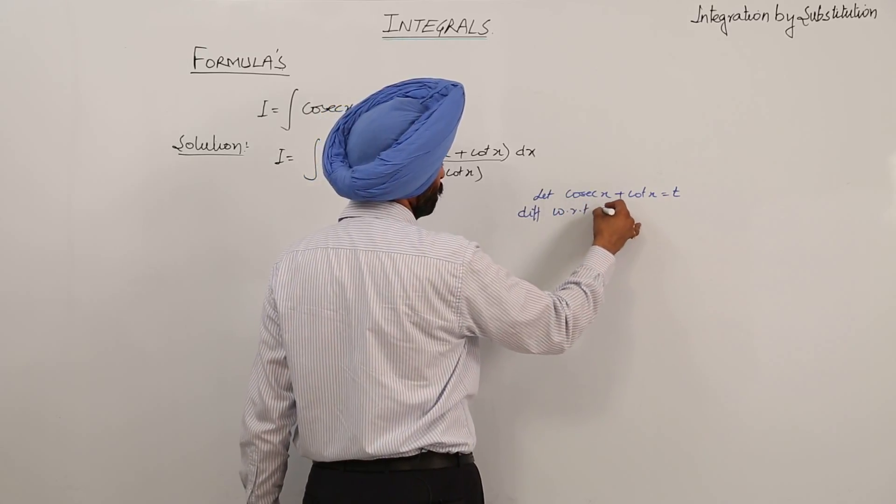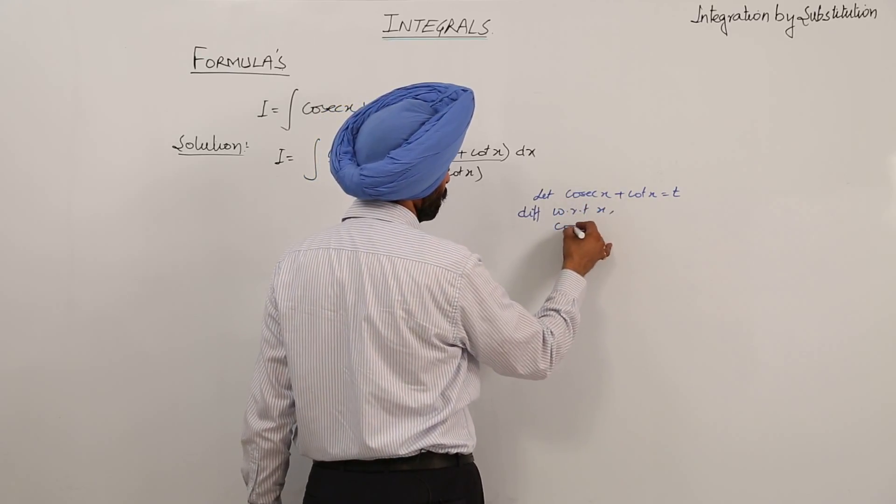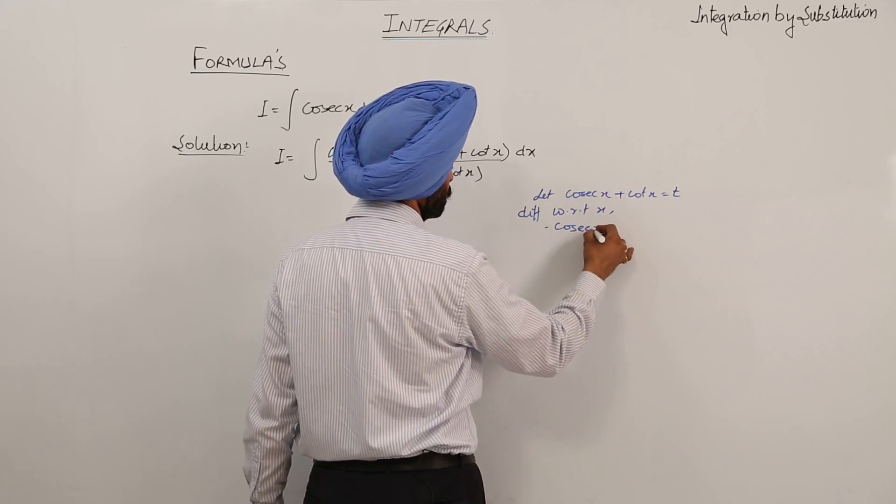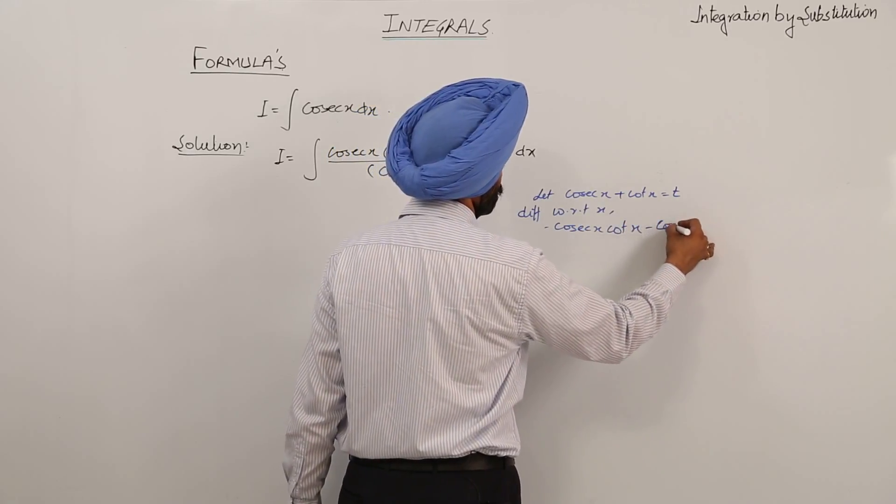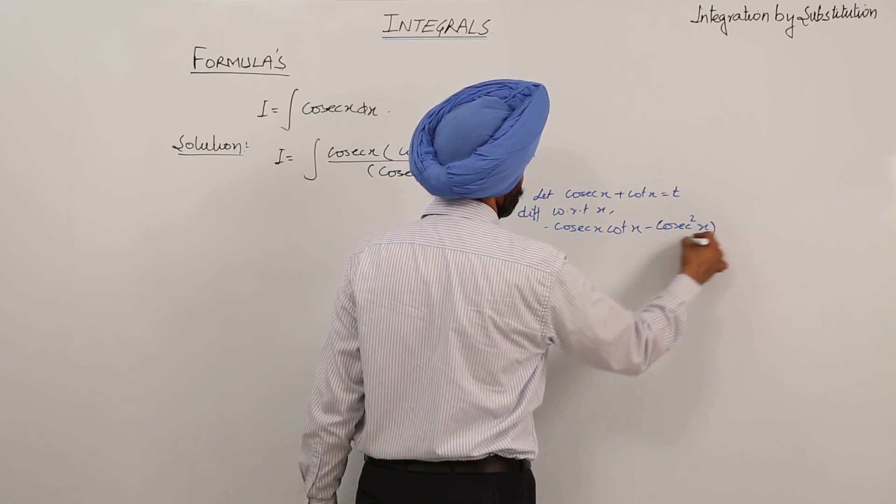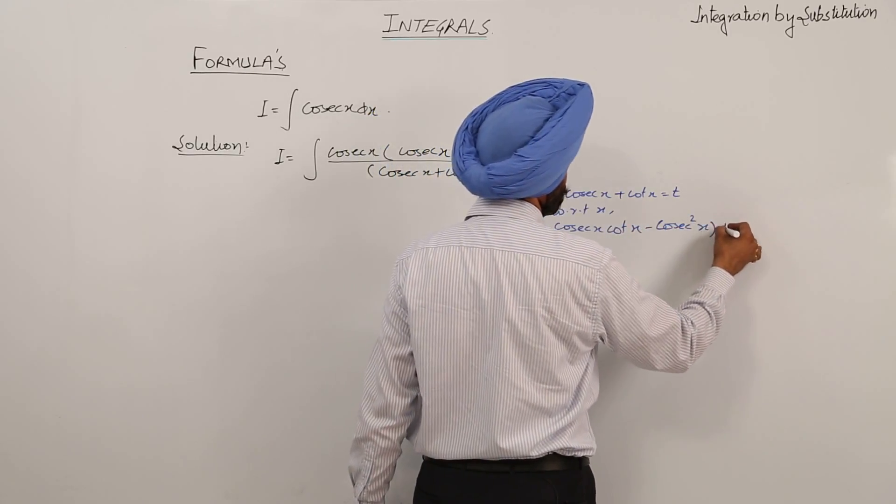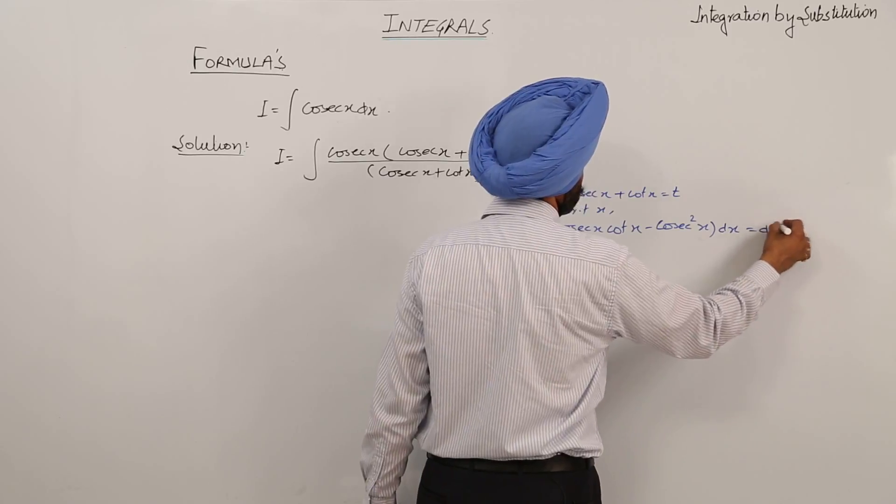Negative cosecant x cot x minus cosecant square x dx equals dt.